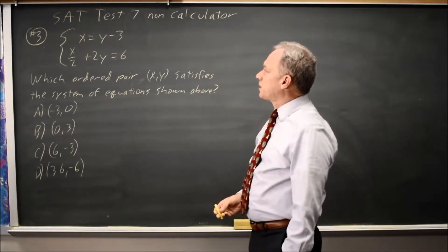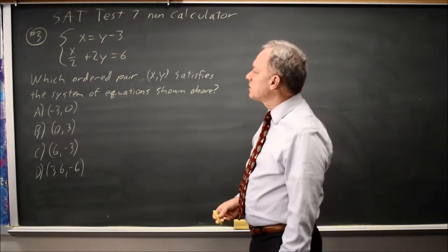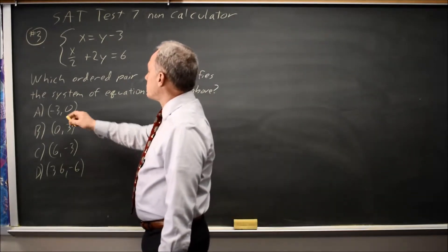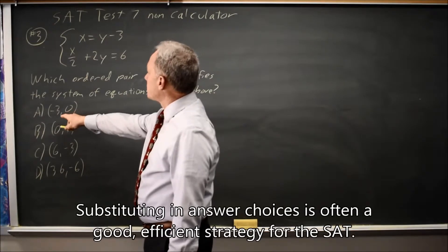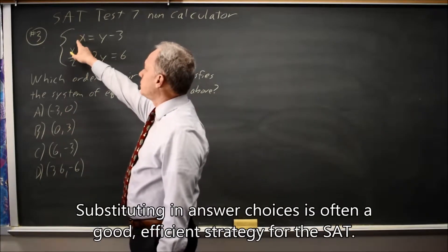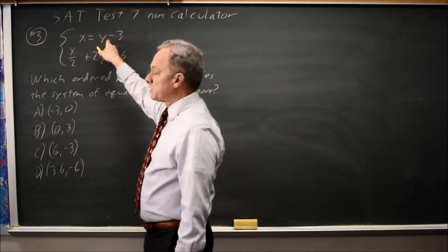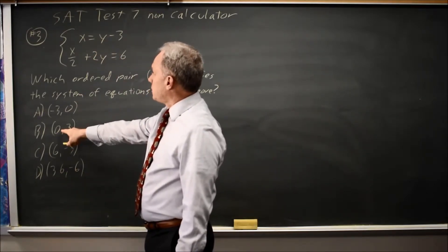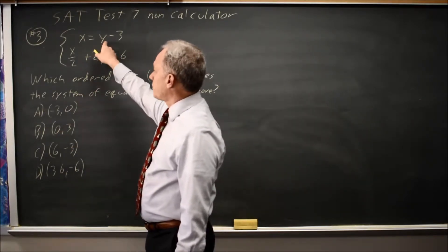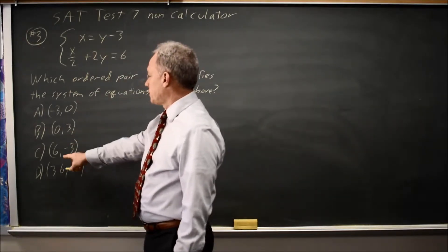Since I don't have a calculator, I'm probably not going to graph this. So let's try substituting them in directly because they've given us points. If x equals negative 3 and y equals 0, negative 3 is equal to 0 minus 3. How about this one? 0 is equal to 3 minus 3. So both of these are good for the first equation.